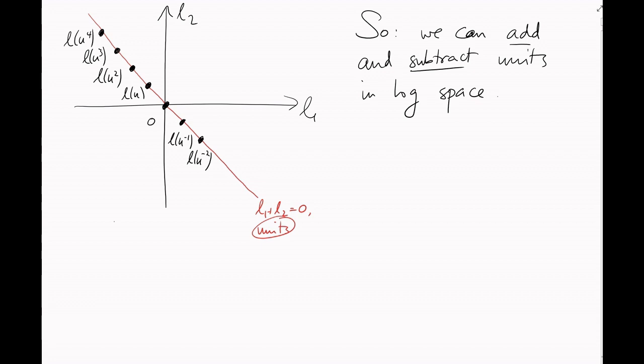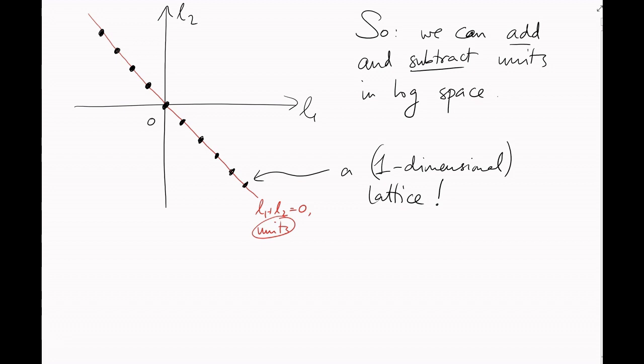If this is looking familiar, then your intuition is right. It's not too hard to show this is actually another lattice. And this time, since we're constrained to this line, we have a one-dimensional lattice. That's going to make it very easy to describe.